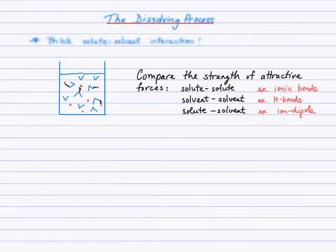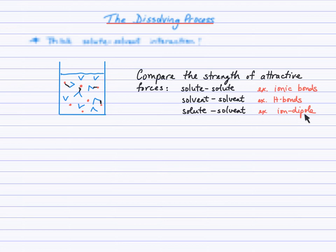When we compare the strength of the attractive forces between the different particles, we'll have a prediction of solubility. For example, the solute-solute interaction in an ionic compound will be the ionic bonds between the ions of opposite charge. In a sample of water as the solvent, it'll be the hydrogen bonds between water molecules. When one of these ions and water particles interact, we call those ion-dipole attractions. Ionic solutes will dissolve in water if the ion-dipole attraction is strong enough to pull those ions away from the crystal lattice and overcome the strength of the ionic bonds.